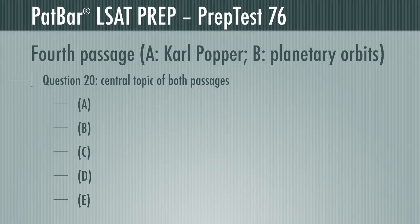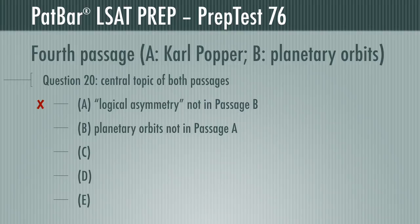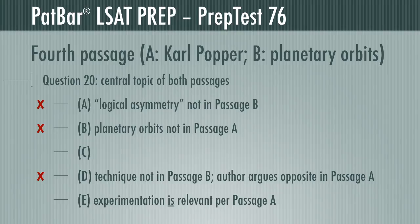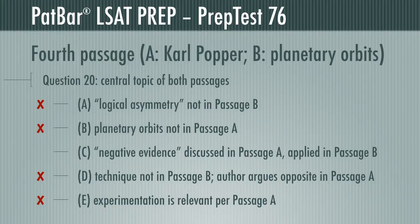Question 20 wants you to choose the central topic of both passages. This should be easy. Passage B doesn't discuss the logical asymmetry of positive versus negative evidence. Passage A doesn't discuss planetary orbits. Proper technique to confirm a scientific theory? Passage B doesn't discuss technique, while Passage A contradicts this entirely. Passage A says experimentation is relevant — that alone eliminates E. Passage A directly discusses negative evidence, while Passage B provides examples of its application. C is correct.